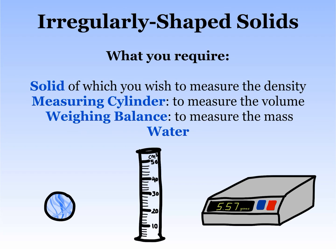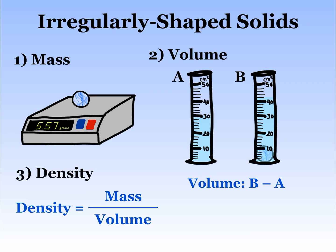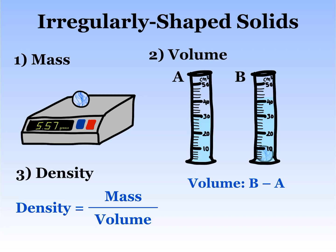Next, we have irregularly shaped solids, such as this marble here. You will need a measuring cylinder and water to measure its volume, and a weighing balance to measure its mass. First, measure the mass of the marble using the weighing balance. Next, put some water in a measuring cylinder and record the volume. Then carefully submerge the marble completely in the water and record the new volume. The volume of the marble is found by taking the second volume and subtracting the first volume from it. Finally, use your results for mass and volume in the density formula to find the density of the marble.